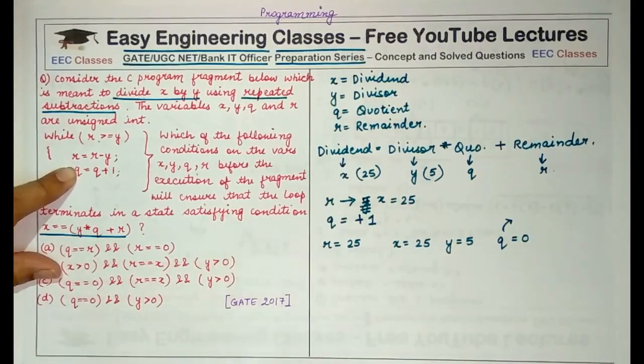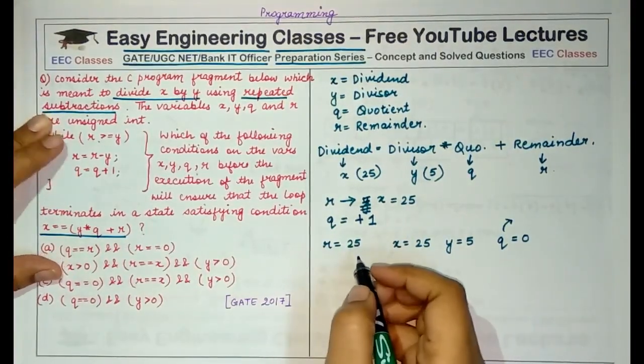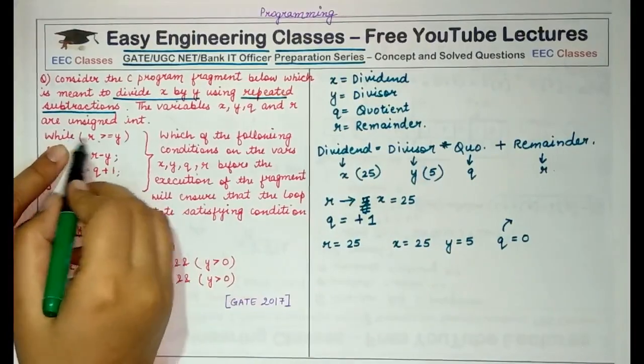we will get a value in the quotient that will tell us the number of integral divisions possible by the divisor for this particular dividend. So all these will become very clear. I check the condition of the while loop,